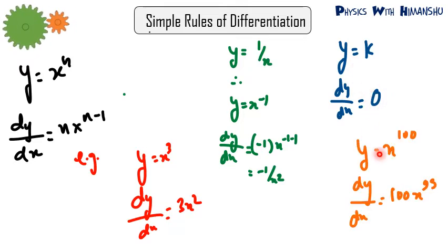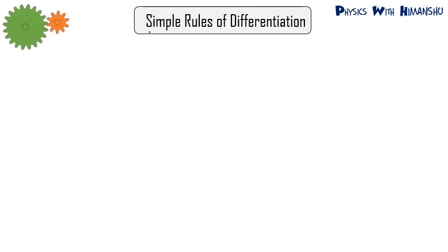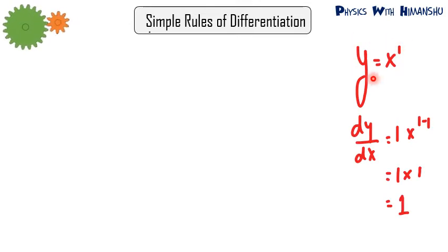One more example: if y equals x raised to power 100, then dy by dx equals 100 times x raised to power 99 — the power comes forward and we subtract 1 from it. If y equals x raised to power 1, then dy by dx equals 1 times x to the power 0, which is 1. So differentiating just x gives you 1: if y equals x, then dy by dx equals 1.